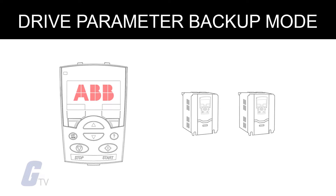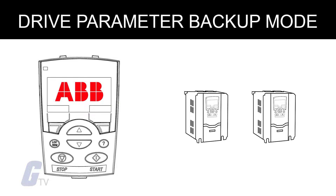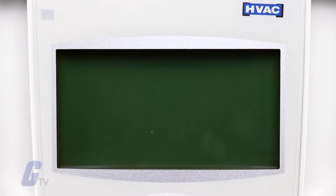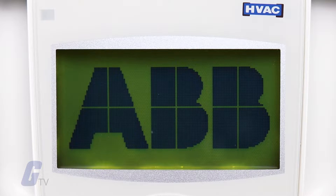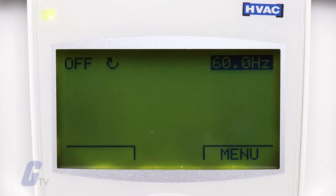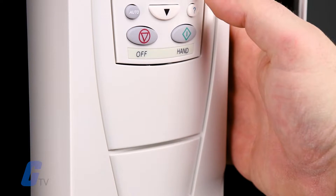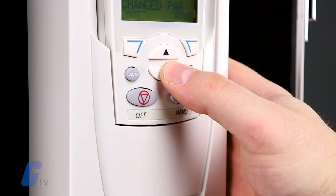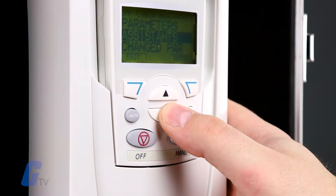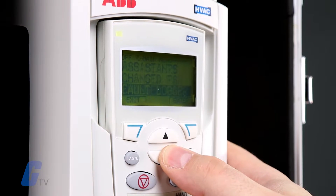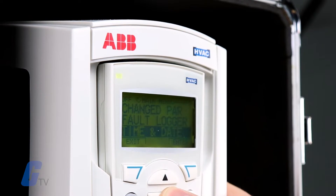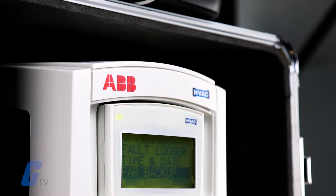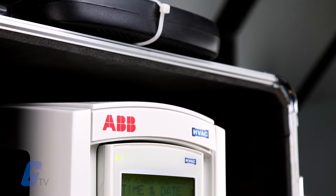The Drive Parameter Backup Mode allows you to export parameters from one drive to another. The parameters are uploaded from a drive to the control panel and downloaded from the control panel to another drive. The Upload to Panel copies all parameters from the drive to the control panel. This includes user sets of parameters, if defined, and internal parameters such as those created by the motor ID run.